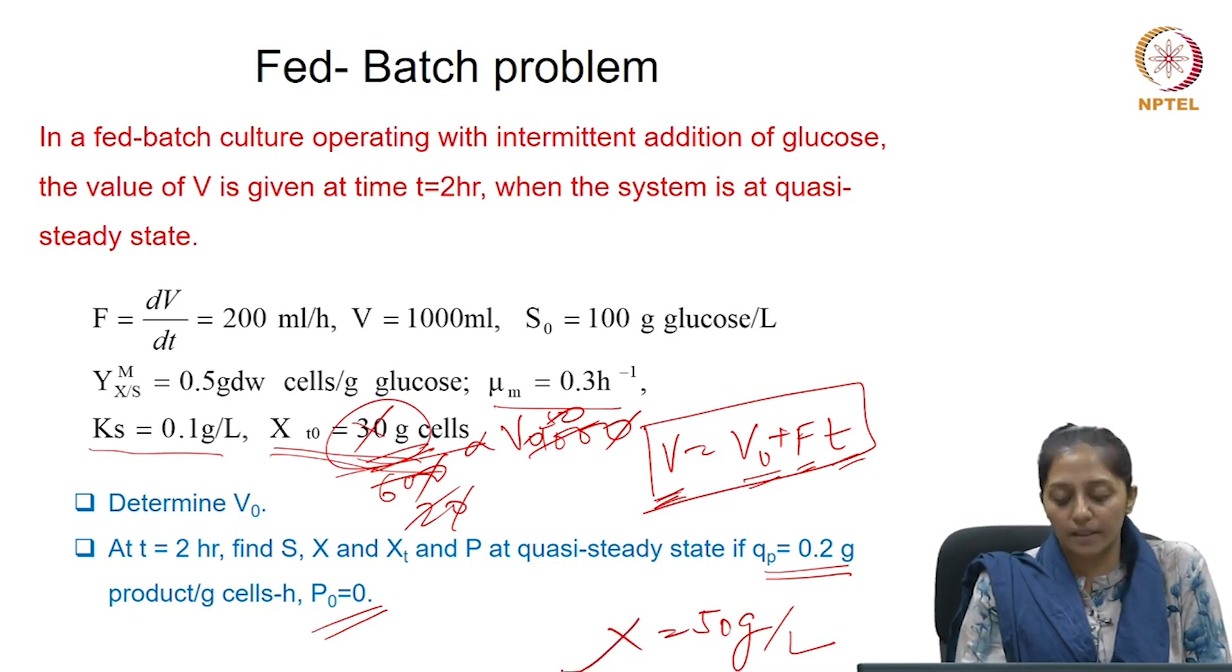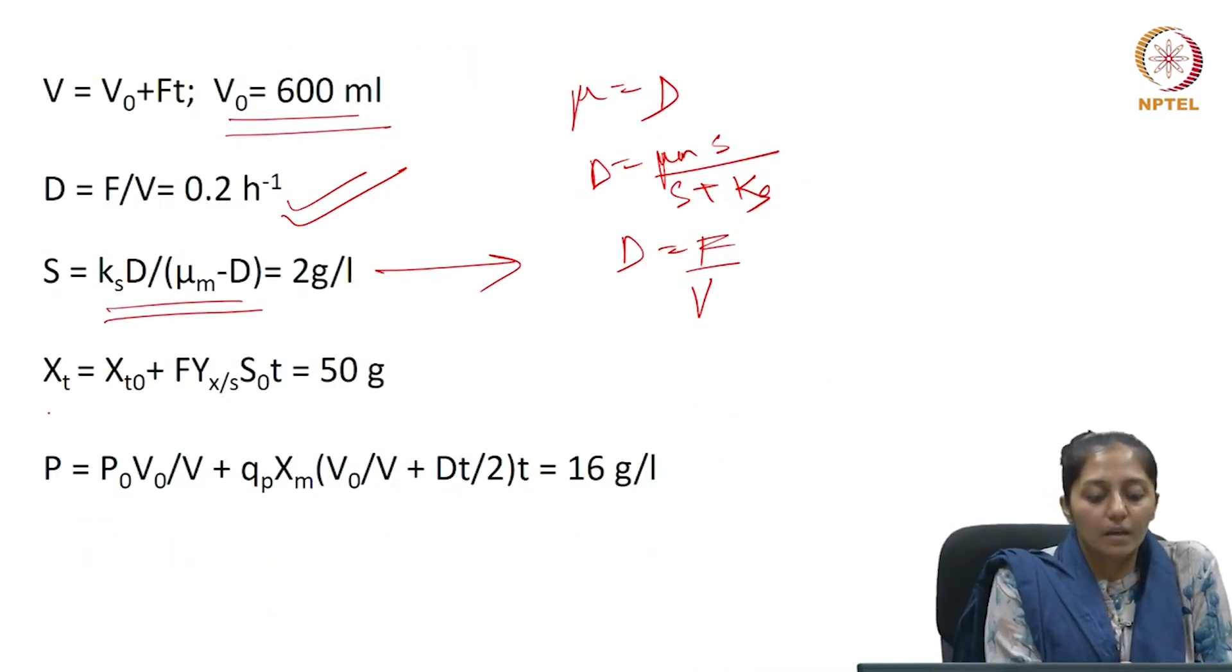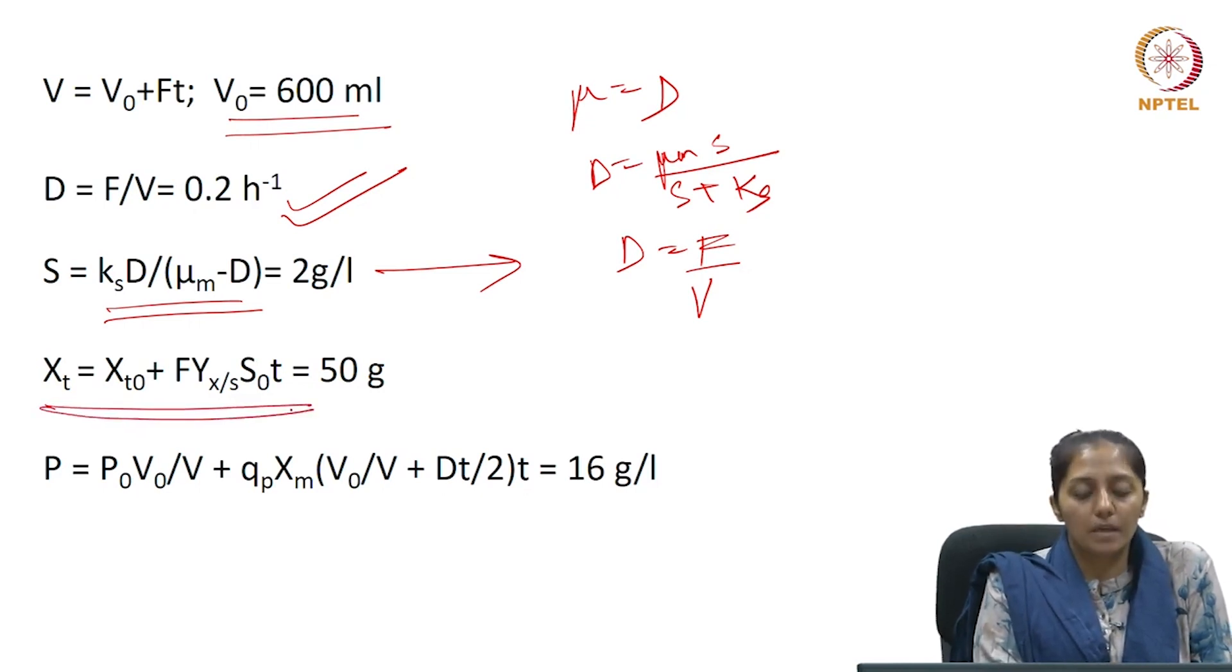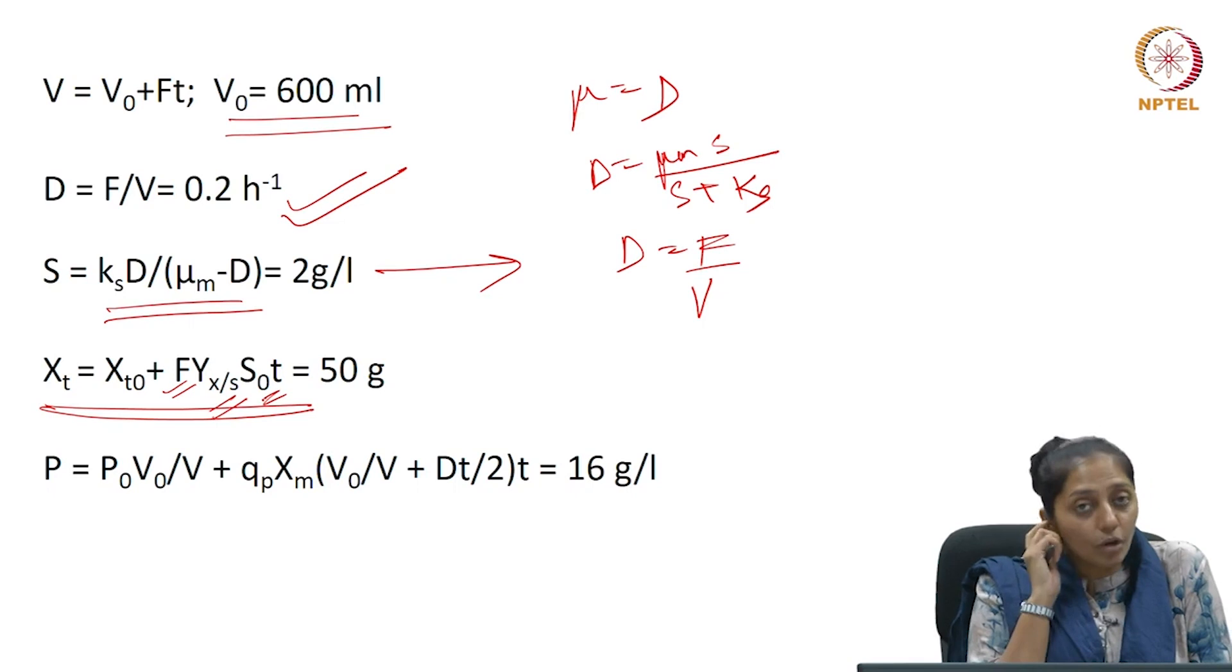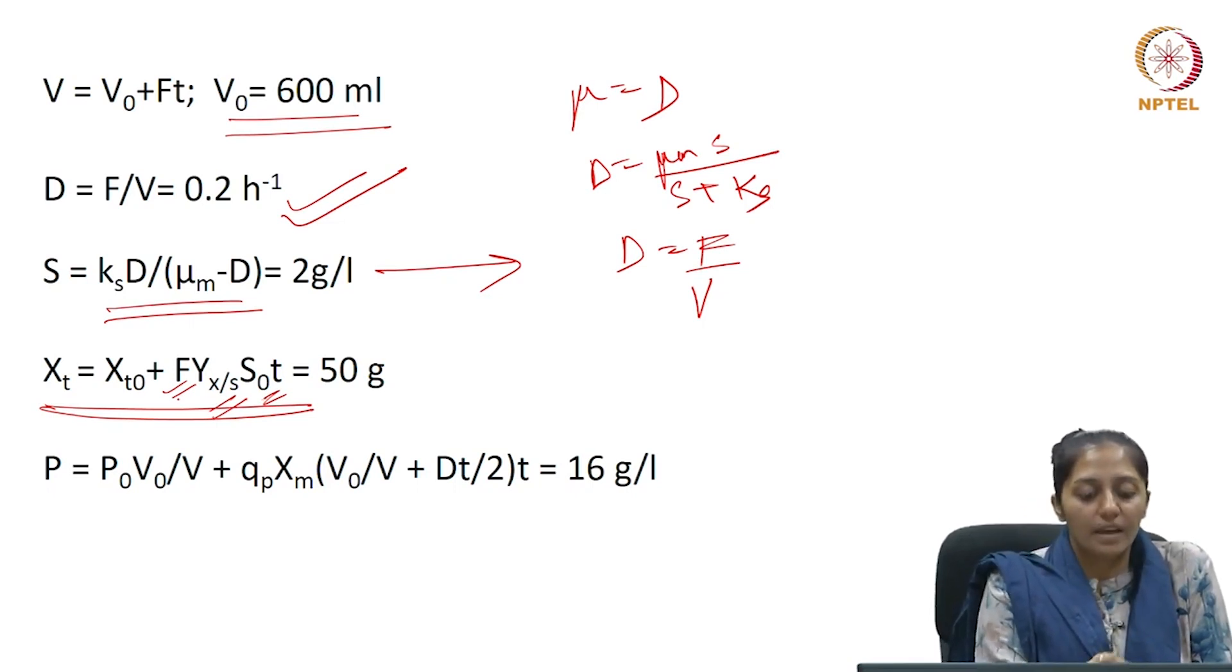Now, we can even cross-check this. Let us see. We know at quasi-steady state how the biomass amount will keep changing with time, given the value of F, Y_X/Y_S, and S₀. So, S₀ is known to us, Y_X/Y_S is also known, F is known, and X_t₀ is also given.